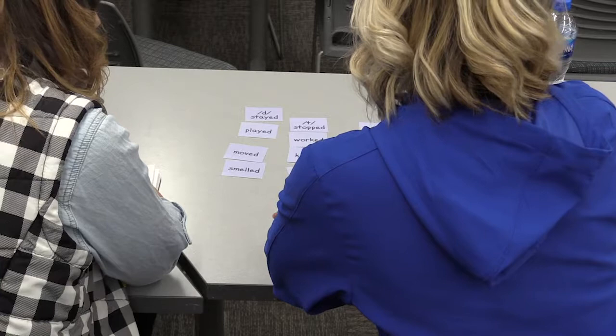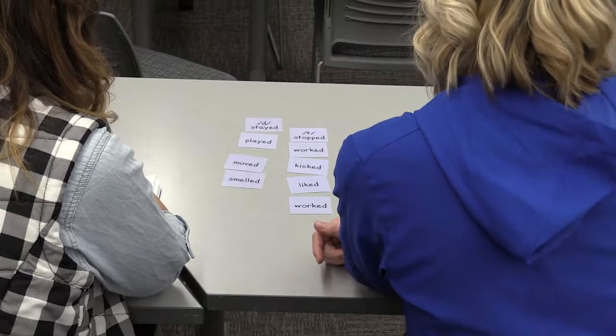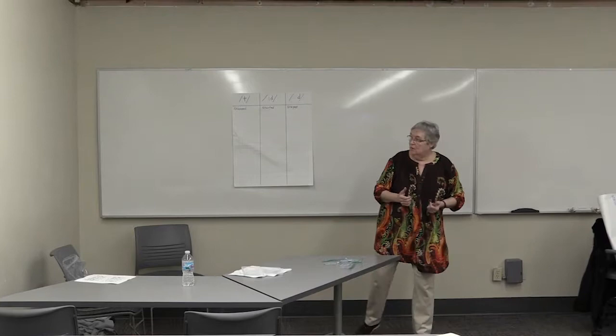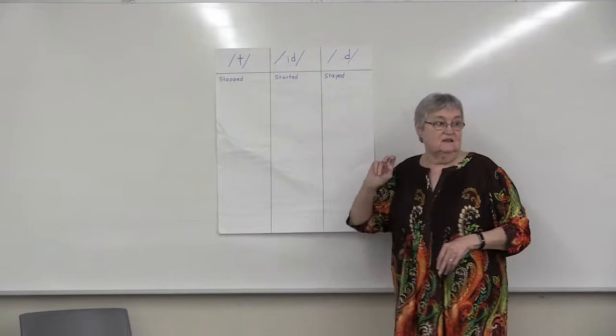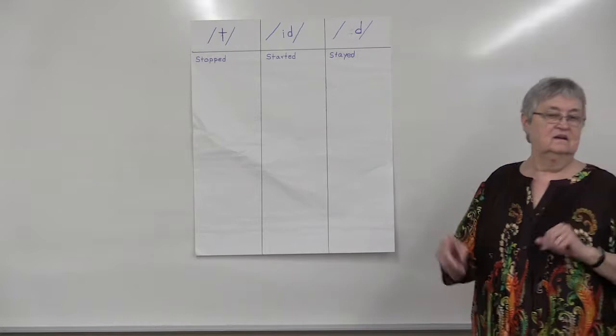All right. Let's see some of the words that you've got there. What do you have under T? Each table can give me one. We have worked. Liked. Kicked. Wow. You all have those under the T? Good for you. What do you have under the id? That table? Added. Planted. Visited. Okay. And now the D. The first table here? Smelled. Moved. Played. That was pretty easy, wasn't it?